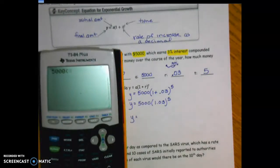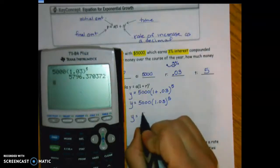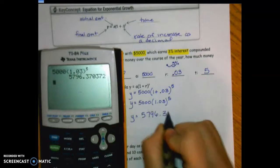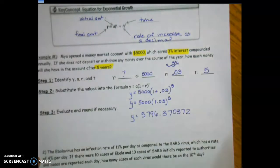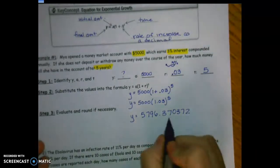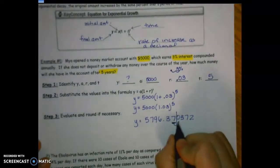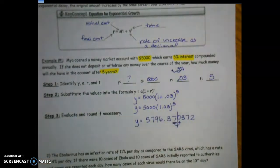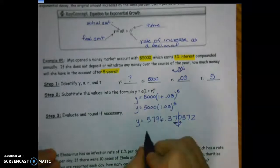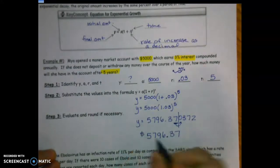Type 5000, open parentheses, 1.03, close parentheses, then the caret for the exponent to the 5th power, and press equals. I get 5796.370372. Since we're talking about money, round to the nearest hundredth — two places after the decimal. The digit to the right is 0, which is four or less, so we rest at 7.